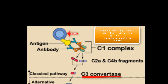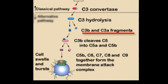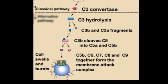C3 convertase will now cleave C3 into C3B and C3A — A always goes away, B always binds. After this, C4B, C2B, and C3B together will form another enzyme complex called C5 convertase, which cleaves C5 into C5B and C5A.